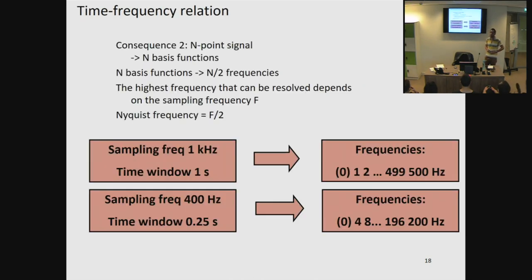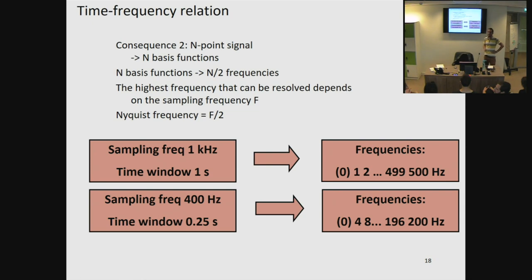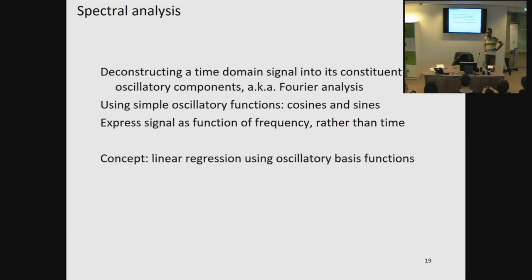A question arose about why you can't estimate frequencies in between the resolution steps. The answer is that in this case we only have a 0.25 second window, so this defines our frequency resolution. If you were to add up multiple 0.25 second windows, then yes, you could get a finer resolution. But with just a single window, you can only estimate multiples of the Rayleigh frequency.